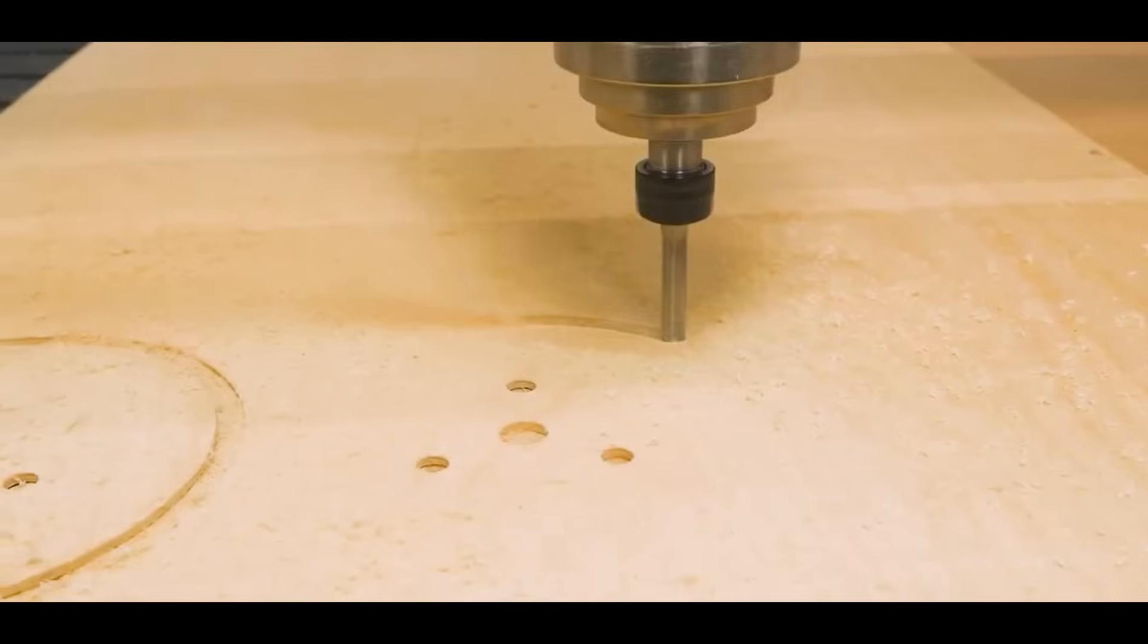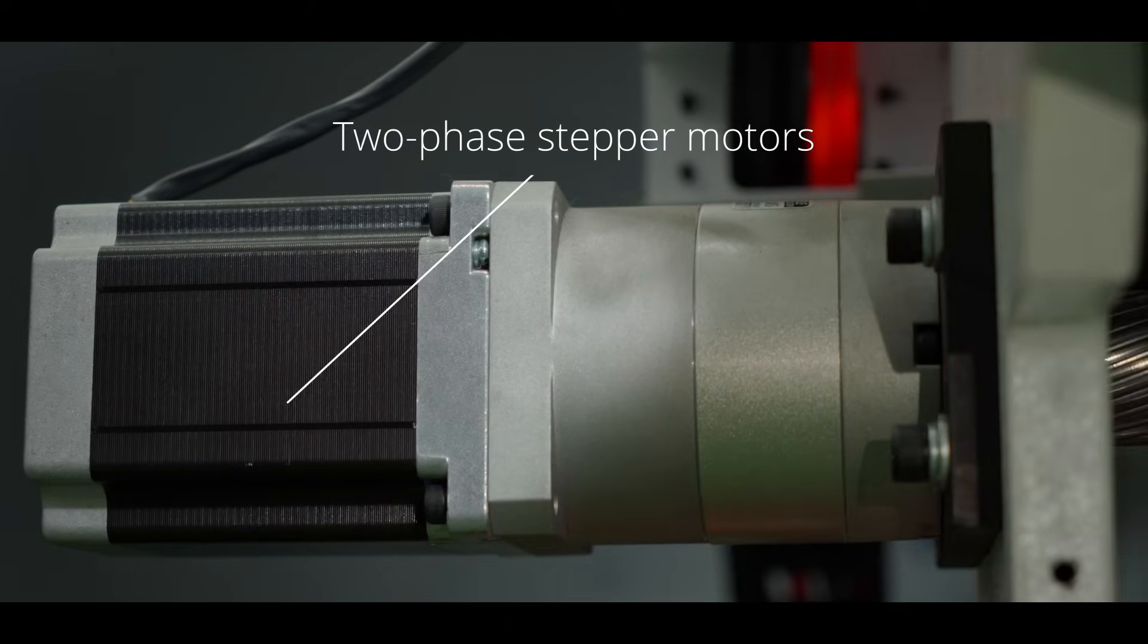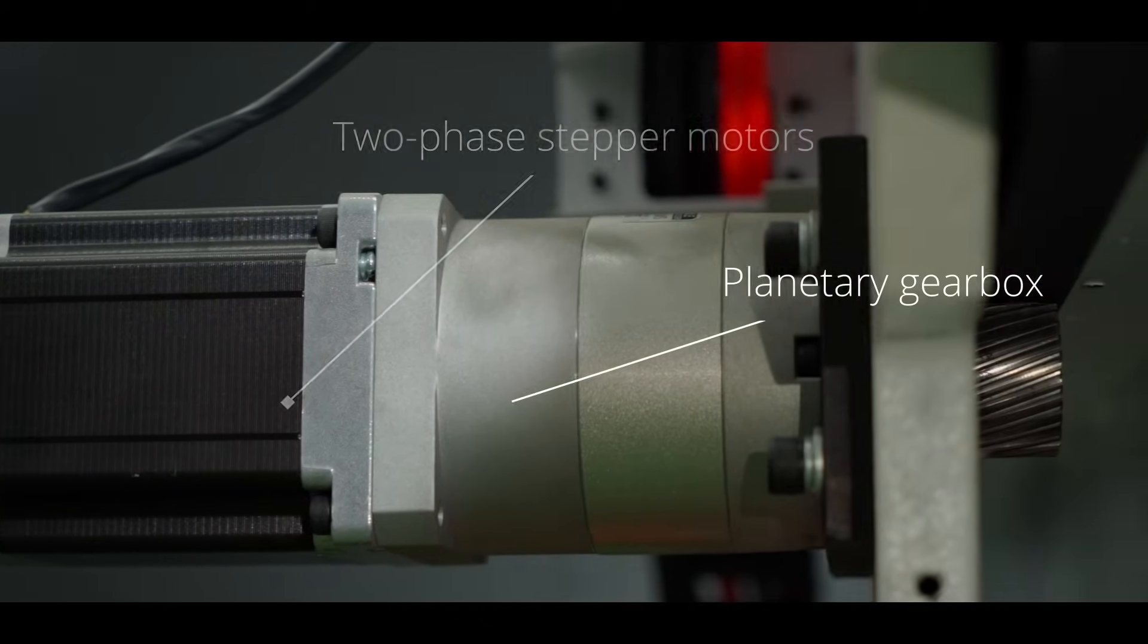The portal's side posts are made of cast iron and have been thickened. The gantry is powered by two-phase stepper motors, simple planetary gears, and Leadshine drivers. Our millers can be equipped with hybrid steppers or servo motors upon request.